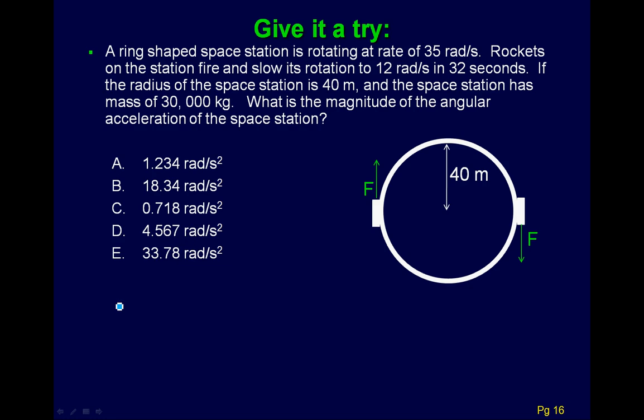So here's an example. This is an old test question. And we're just going to do a couple different things here. So we have a ring-shaped space station is rotating at a rate of 35 radians per second. Rockets on the station fire in slow rotation to 12 radians per second in 32 seconds. If the radius of the space station is 40 meters and the space station has a mass of 30,000 kilograms, what is the magnitude of the angular acceleration of the space station? So we've got a bunch of information here. And this is a multi-part question. So basically this is your space station. It's a ring-shaped. And the idea is that people and stuff live in the little ring part of it. And it's got to be rotating in order to mimic gravity. And so what we're doing is we're slowing it down here. Maybe it's going too fast or whatever it might be. And so there's little rockets pushing out here and here to make this thing so you're actually reducing the spin. And so the angular acceleration would be in this direction here. So now let's think about this and we'll talk about this one in a second. So what do you think is the angular acceleration?